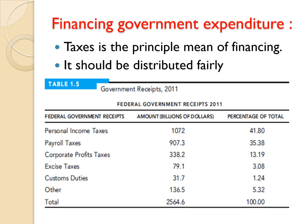The second revenue source is payroll taxes, and the third is corporate profit taxes. Excise taxes, or indirect taxes, represent 3% of total federal government receipts. Custom duties represent a small percentage of just 1.2%, and other sources account for 5%. So personal income taxes are the main item for federal government revenues in the USA.